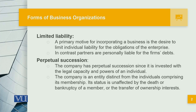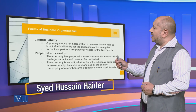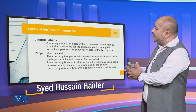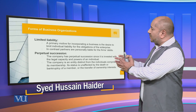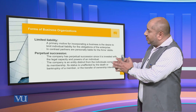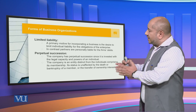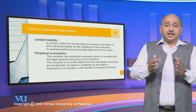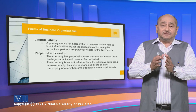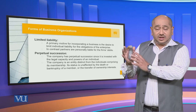Secondly, in a company there is perpetual succession. In perpetual succession, the succession is vested in the legal capacity and powers of an individual. Even if there is a death or a bankruptcy, it does not affect the company. Perpetual succession means it doesn't depend upon the different shareholders — there is continuity and the company does not end. However, in a partnership or proprietorship, with the death of the individual, those entities tend to vanish. So the fundamental differences are: one is limited liability, and the second is perpetual succession.